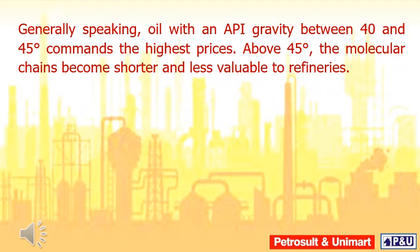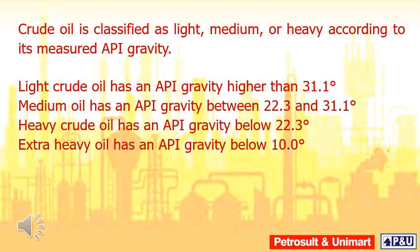Generally speaking, oil with an API gravity between 40 and 45 degrees commands the highest prices. Above 45 degrees, the molecular chains become shorter and less valuable to refineries. Crude oil is classified as light, medium, or heavy according to its measured API gravity.